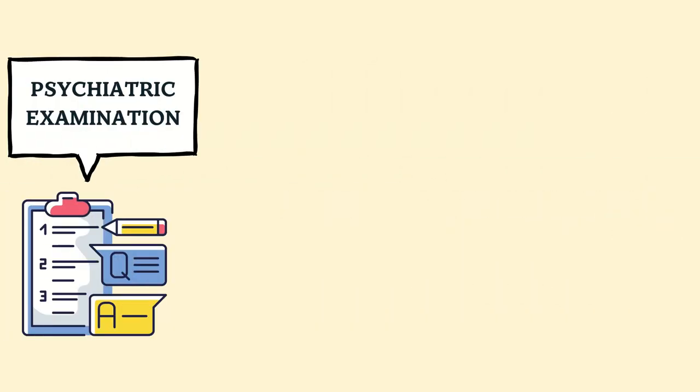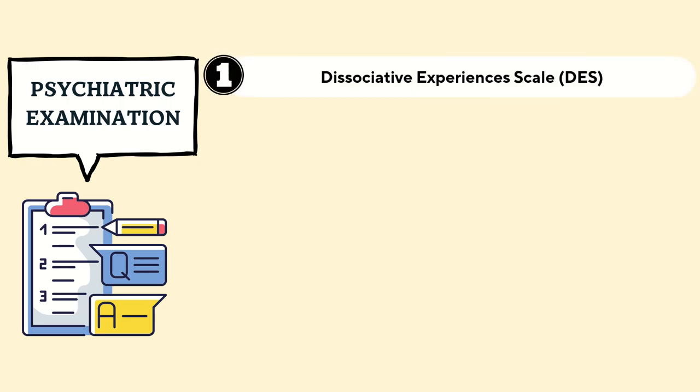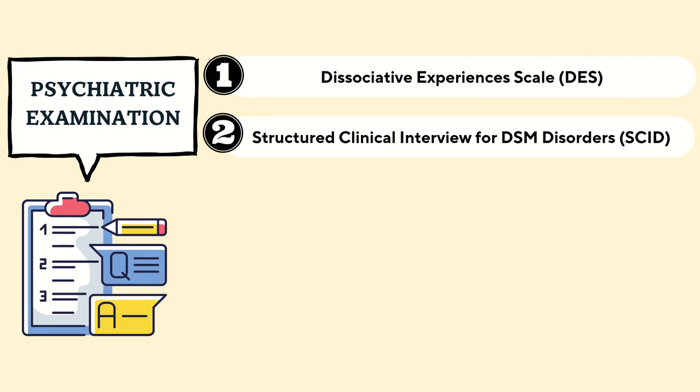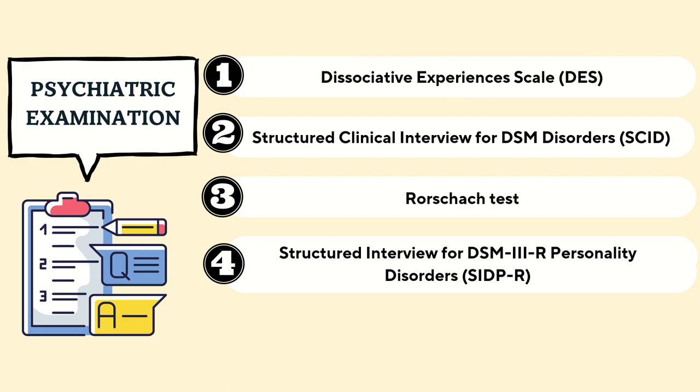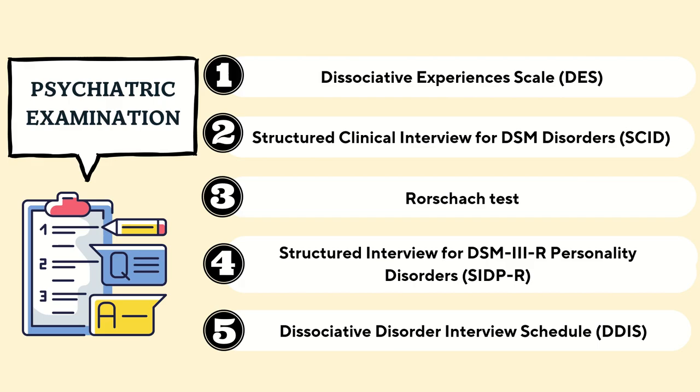Other than DSM-5, psychiatrists often use diagnostic scales to assess the severity of DID symptoms and for differential diagnosis from other disorders with similar symptoms of dissociation. These include the Dissociative Experiences Scale, Structured Clinical Interview for DSM Disorders, Rorschach tests, Structured Interview for DSM-3R Personality Disorders, and Dissociative Disorder Interview Schedule.